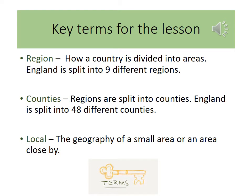Key terms for the lesson today. Region: how a country is divided into areas — England is split up into nine different regions. Counties: regions are split up into counties — England is split into 48 different counties. Local: the geography of a small area or an area close by.